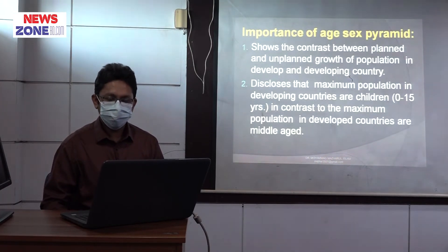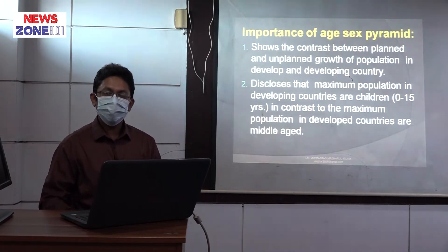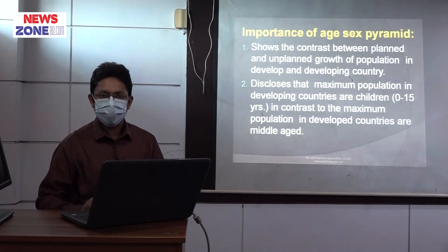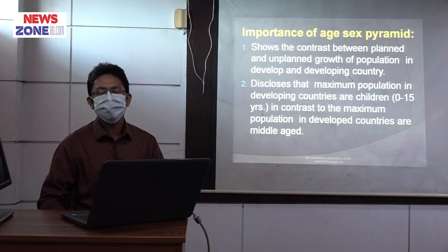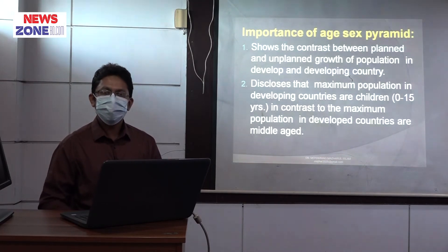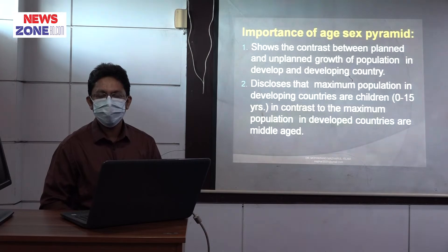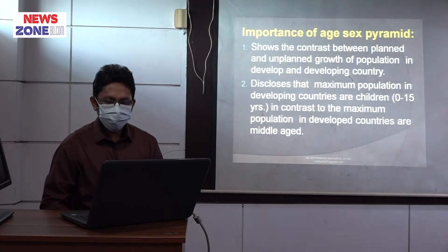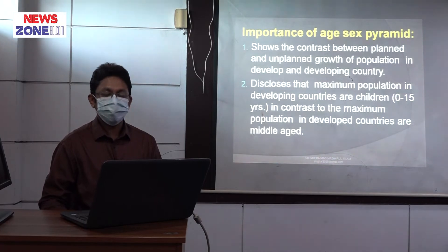The population pyramid shows the contrast between planned and unplanned growth of population in developed and developing countries. Population growth is planned or unplanned based on our socio-economic, cultural, religious, and climate background. It discloses that the maximum population in developing countries are children, in contrast to developed countries where the maximum population are middle-aged.